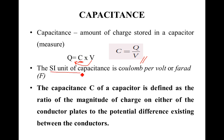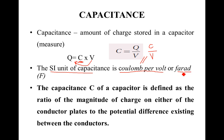The SI unit of capacitance: since it is charge divided by potential difference, the unit of charge is coulomb and the unit of potential difference is volt, so it is coulomb per volt. This SI unit of capacitance is also called the farad, symbol capital F, named after the person Michael Faraday.